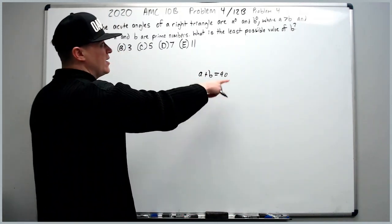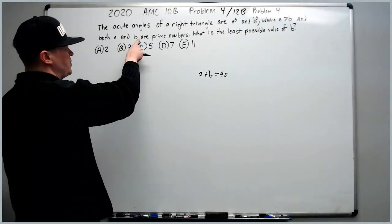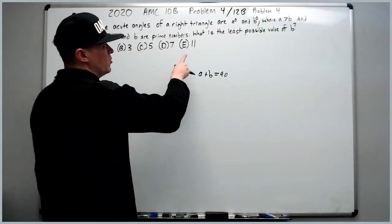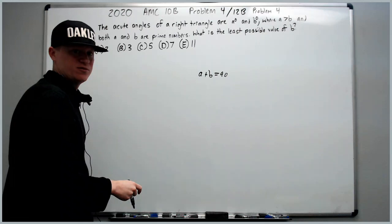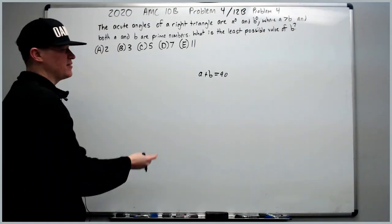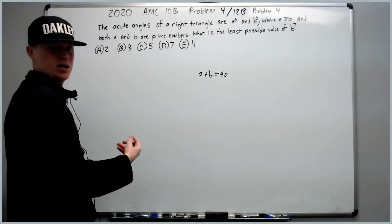A is greater than B. And both A and B are prime numbers. What is the least possible value of B? Because we want least possible value, we should probably use the solutions to help us out.